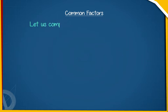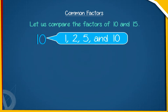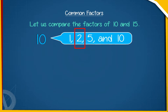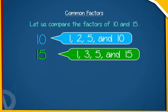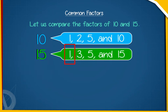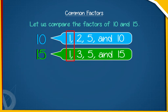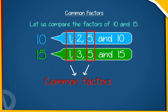Let us compare the factors of 10 and 15. The factors of 10 are 1, 2, 5 and 10. The factors of 15 are 1, 3, 5 and 15. The numbers 1 and 5 are common factors of both 10 and 15.